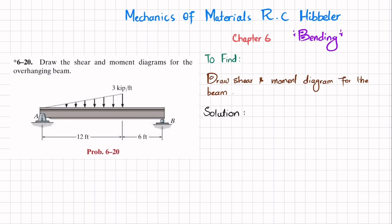Let's start with the solution. Removing the pin support at point A gives a reaction force R_A, and removing the roller support at point B gives a reaction force R_B. We will find R_A and R_B using equations of equilibrium. The first equation is that the sum of all forces along the Y direction equals 0, with upward forces taken as positive. So R_A and R_B are both acting upward.